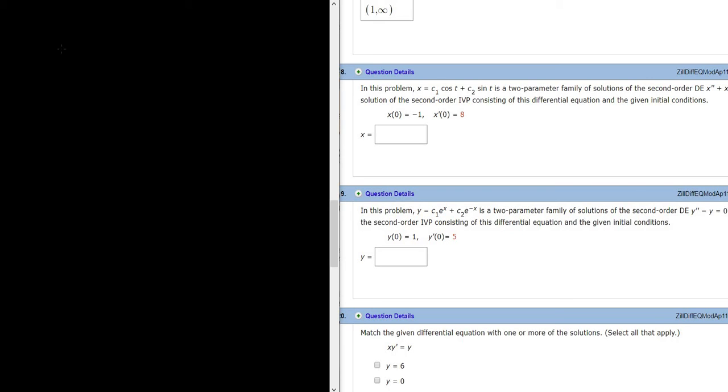In this problem they give us x equals, let's go ahead and write it down, c1 cosine t plus c2 sine t.